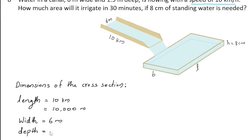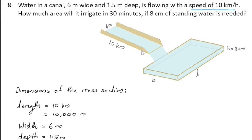The depth of the water that flows through the canal is 1.5 meters. Water flows into the land for 30 minutes. This land is rectangular in shape. After irrigating for 30 minutes, the depth of water standing on this area is 8 centimeters. We have to find the area of this land. The area of this land is the product of its length and breadth. Let's take the area of this land as x square meters, that is x equals the product of length and breadth.